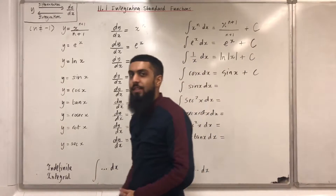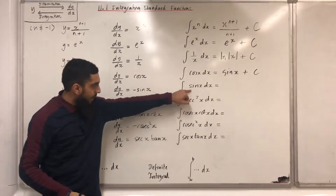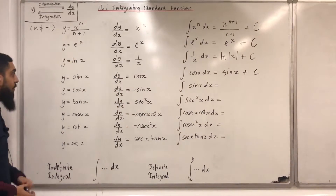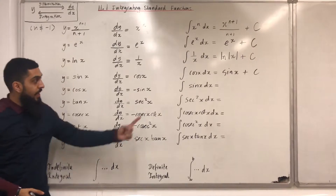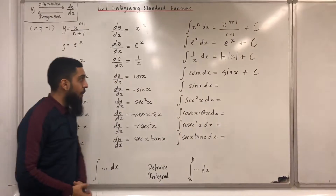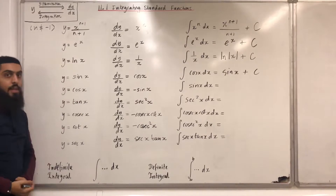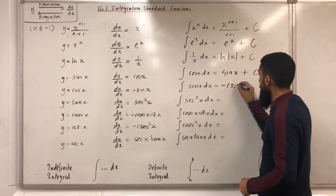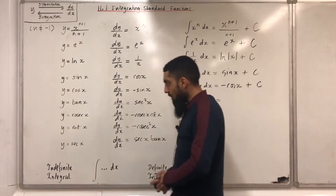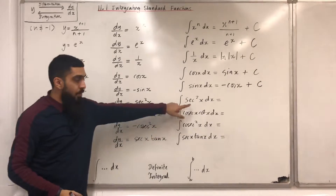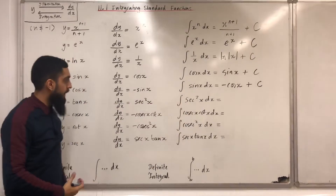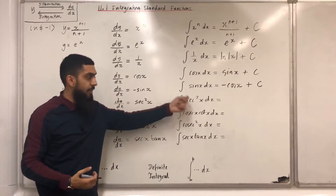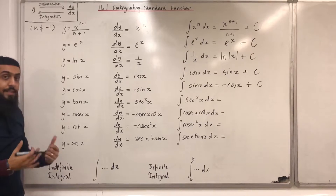The next crispy integral: the integral of cos x with respect to x. dy/dx equal to cos x gives us y equals sin x, therefore the integral of cos x with respect to x will be sin x plus c. The integral of sin x with respect to x: dy/dx equal to minus sin x gives us y equals cos x, therefore the integral of sin x is minus cos x plus c. The integral of sec²x with respect to x: dy/dx equals sec²x gives us y equal to tan x, therefore the integral of sec²x is tan x plus c.